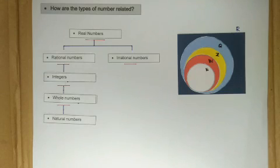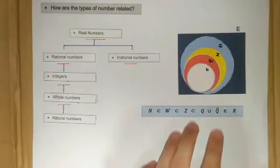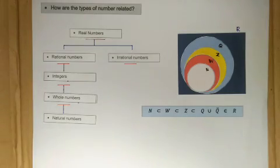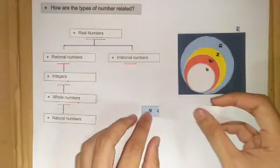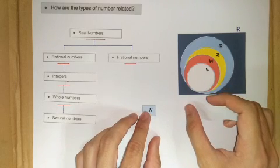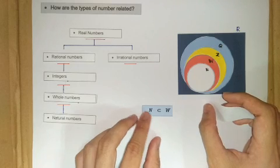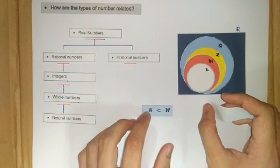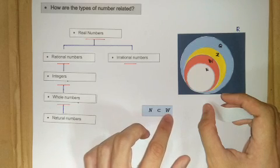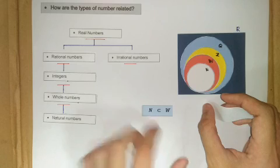The relationship between these types of numbers can be expressed as follows. Starting with natural numbers: natural numbers are a subset of whole numbers, so all natural numbers are whole numbers, but not all whole numbers are elements of natural numbers.